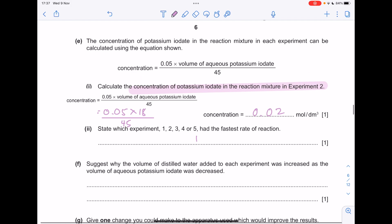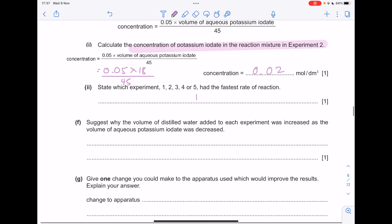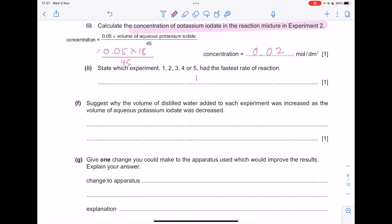Suggests why the volume of the distilled water added to each experiment was increased as the volume of aqueous potassium iodate was decreased. So obviously it's the potassium iodate that's the interesting reactant here, but you've got to maintain that volume throughout, which is 35 centimetres cubed. So that's why as this value decreased, the distilled water increased to keep the total volume constant.